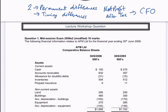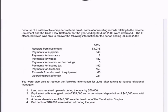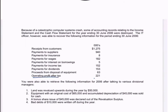We're going to start off with net profit after tax as the first line in our indirect method. Usually you would have an income statement in a question, but this question says there was a computer system crash and the income statement and cash flow statement information was destroyed. The IT office was able to recover the following information, including operating profit after tax of 221, which is equal to our net profit after tax. We can use that as the first line in our indirect method.